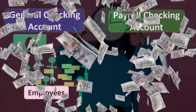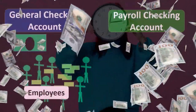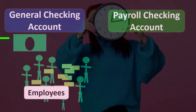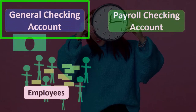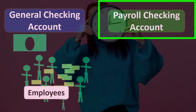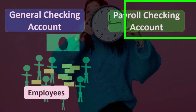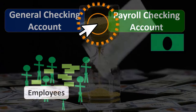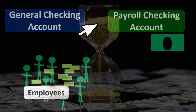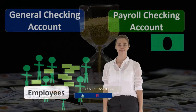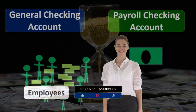We have the general checking account. We're going to determine what the cash amount of payment will be for processing the payroll, take that amount out of the general checking account, transfer it to the payroll checking account, and then process the payroll checks to the employees from the payroll checking account.